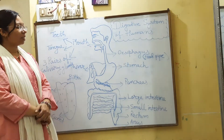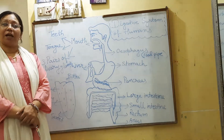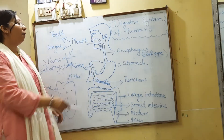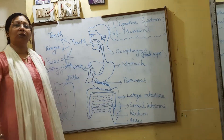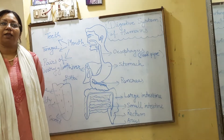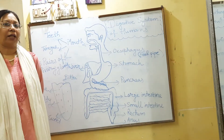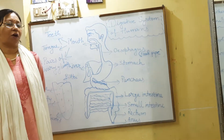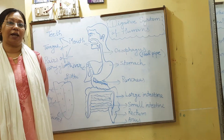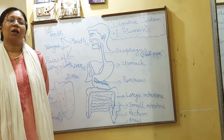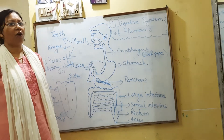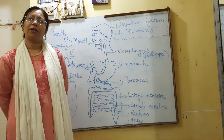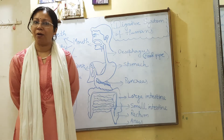The digestive system starts from the mouth. In the mouth, teeth, tongue, and three pairs of salivary glands are found. The functions of different teeth you are already knowing.